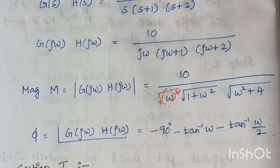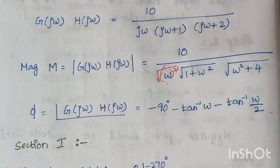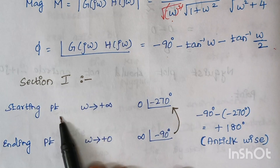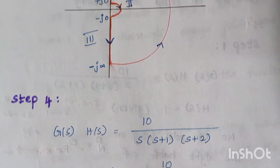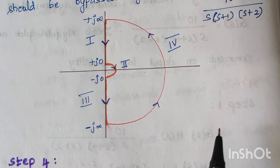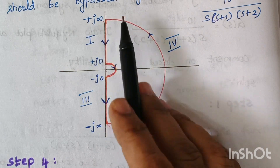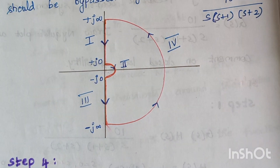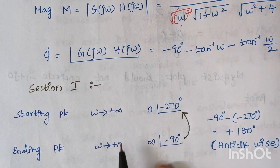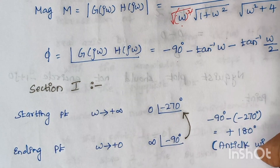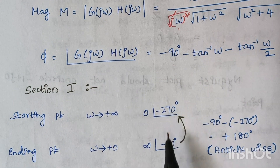Next we analyze section by section. For section 1 we frame a table with a starting point and an ending point. Looking at the diagram, section 1 starts at plus j infinity and ends at plus j zero. So the starting value of omega is infinity and at the ending point omega is zero. We substitute these values into the magnitude and phase expressions.